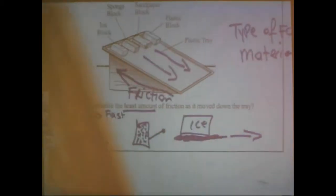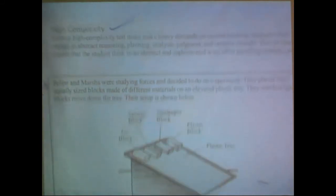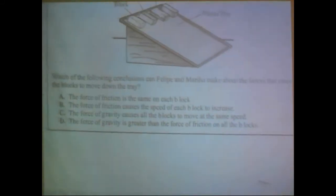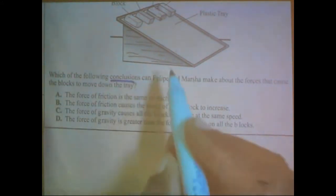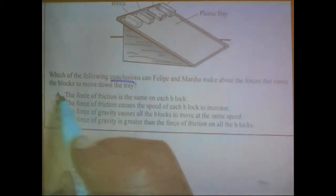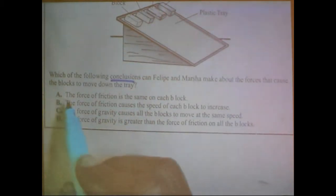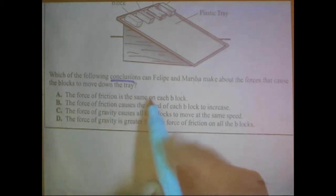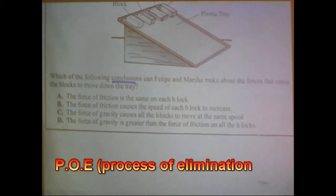Our high complexity now, this is our high complexity. High complexity, same question. Same setup. But look what's going on. Look what they're asking for. They're saying, which of the following conclusions can Felipe and Marsha make about the forces that cause the blocks to move down the tray? What or which conclusion can you draw from it? Look at that. It said the force of friction is the same on all the blocks. That is not true. That is a false statement. So right away, we know we can eliminate that one.